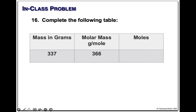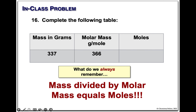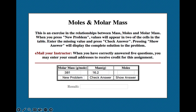Number 16: complete the following table. We're given a mass, a molar mass, and we want moles. Mass divided by molar mass is moles — simple as it can be. Take our mass divided by molar mass: this is 0.921 moles. On the exam this will probably be in a table just like this — given molar mass and mass, need moles; mass divided by molar mass gives us moles.